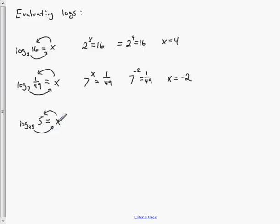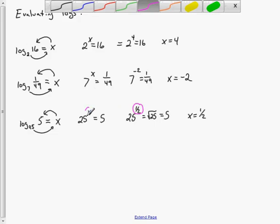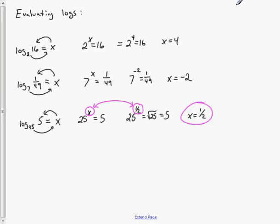For log base 25 of 5: 25 to the x equals 5. Since 5 is smaller than 25, I'm looking for some root. Since 5 is the square root of 25, I need to write square root as an exponent, which is 1/2. So 25 to the 1/2 is the same as the square root of 25, which is 5. Therefore x equals 1/2. That's how you evaluate logs — rewrite them in exponential form.